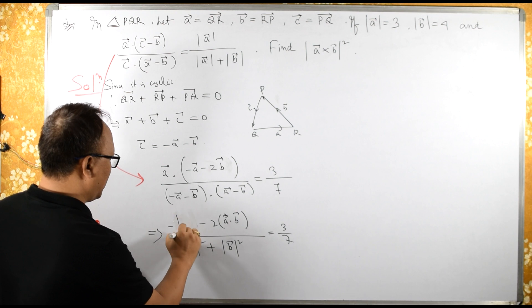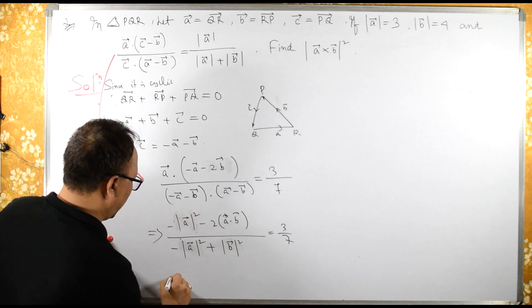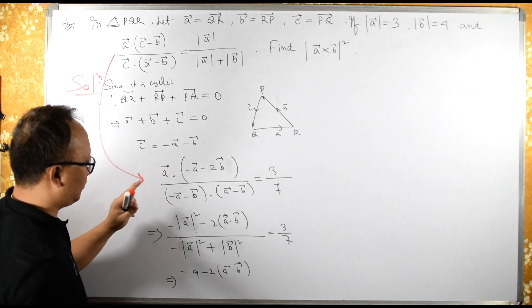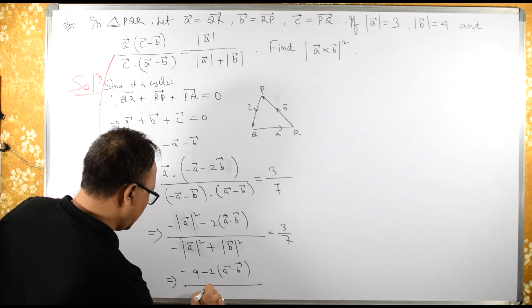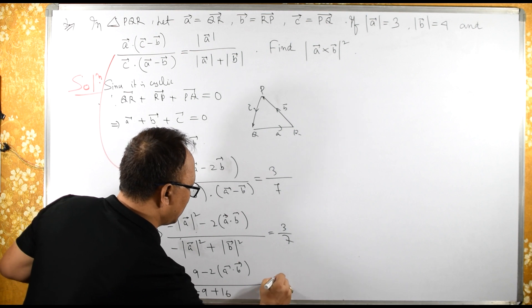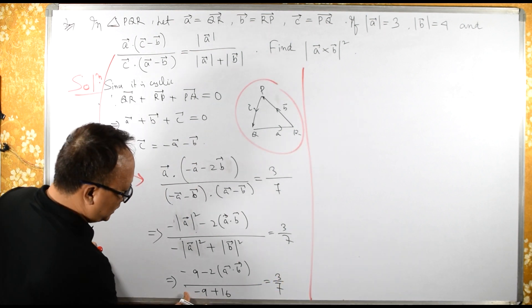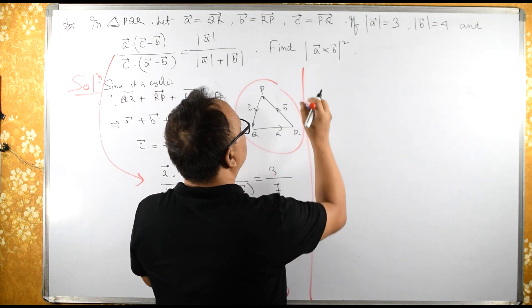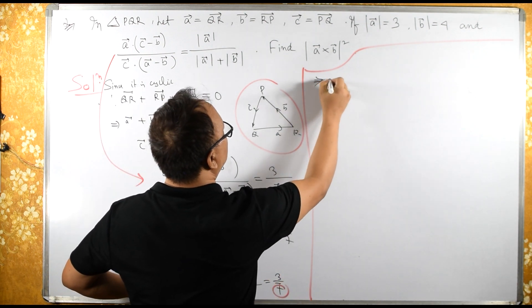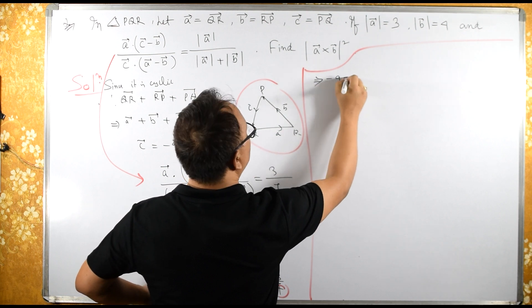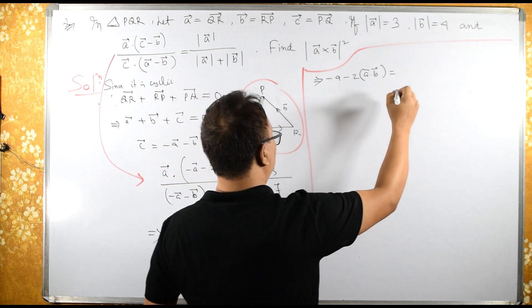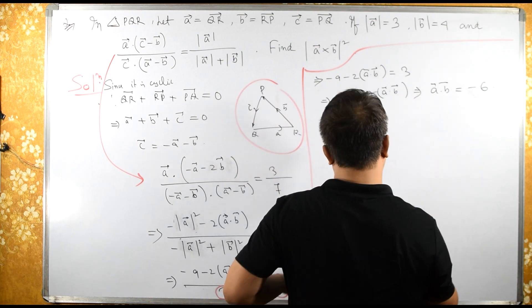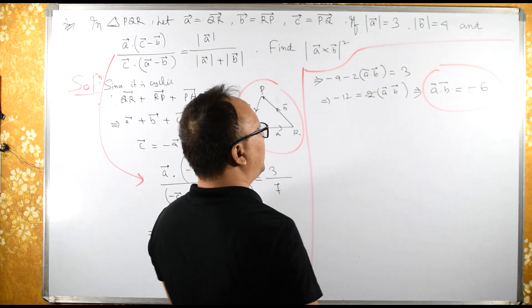We can also write mod of A squared as 9. So this implies: 9 minus 9 minus twice A dot B upon the denominator. The 7s cancel, and we get: minus 9 minus twice A dot B equals 3. Solving, A dot B equals minus 6.